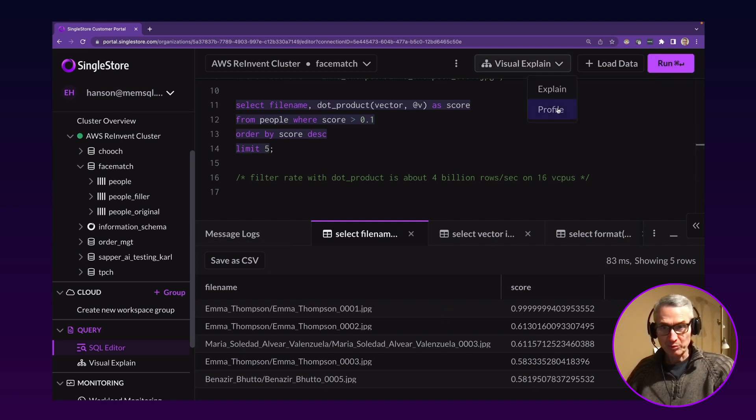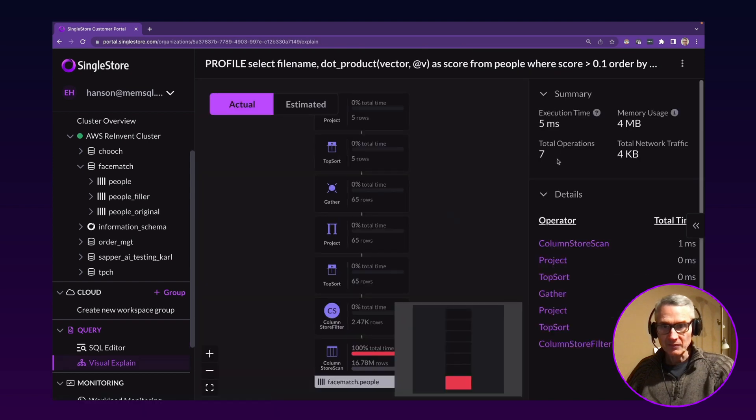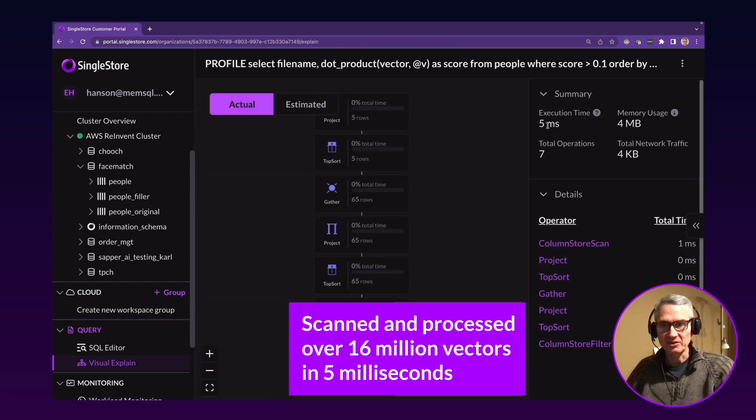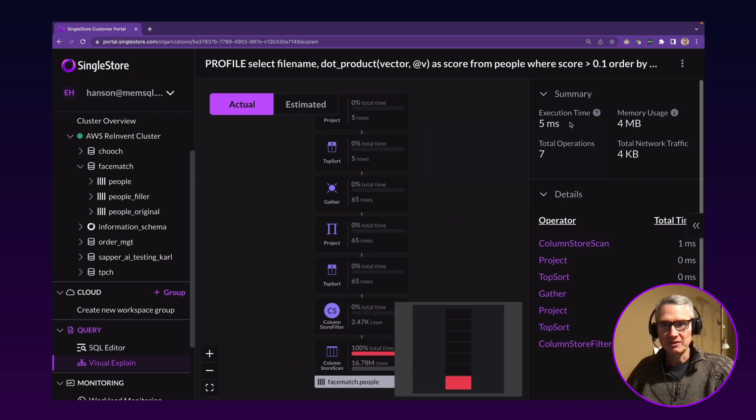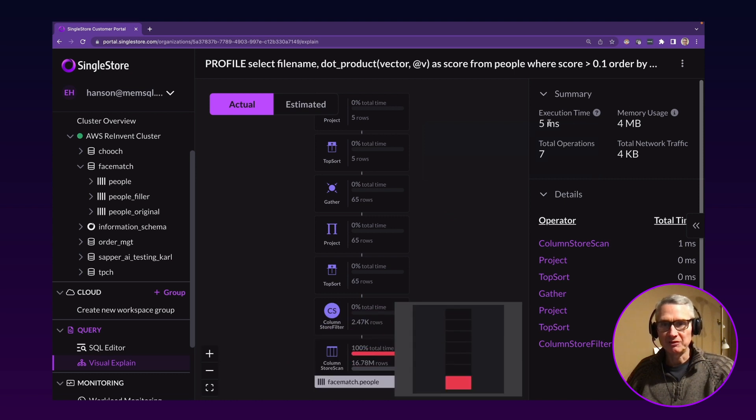If we look at the profile plan, it took five milliseconds to execute that particular query that scanned and processed 16 million and some odd vectors on 16 VCPUs. So that's billions of vector matches per second on a reasonably small machine.